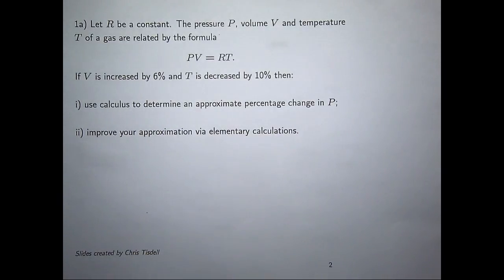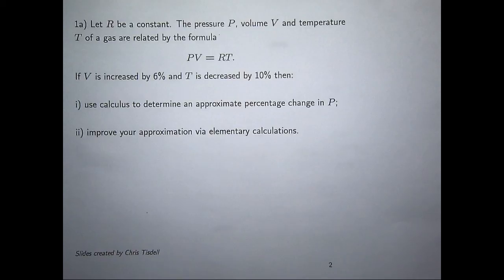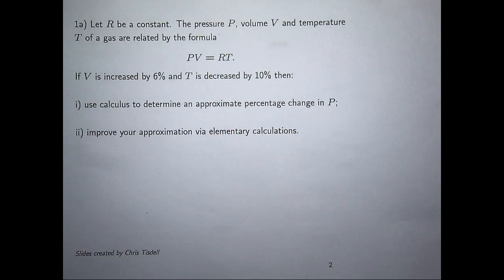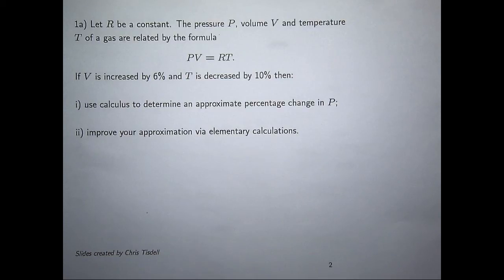Suppose we increase the volume by 6% and we decrease the temperature by 10%. This question asks us to do two things: use calculus to determine an approximate percentage change in the pressure, and then part two asks you to improve your approximation through elementary calculations. This suggests the problem may actually be done better by non-calculus methods, so the point is just to compare the methods and their accuracy.